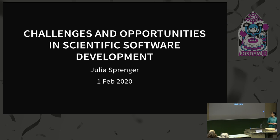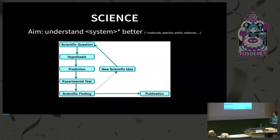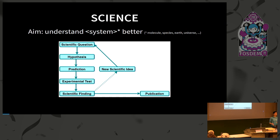First I'm going to give you a bit of background so we have a common understanding of how science works. In general, the sciences aim to understand certain systems better. This might be something really tiny, from individual molecules and how they fold, to how the brain of a certain species works, how Earth's climate is changing, or where we are coming from and where we are going — the whole universe.